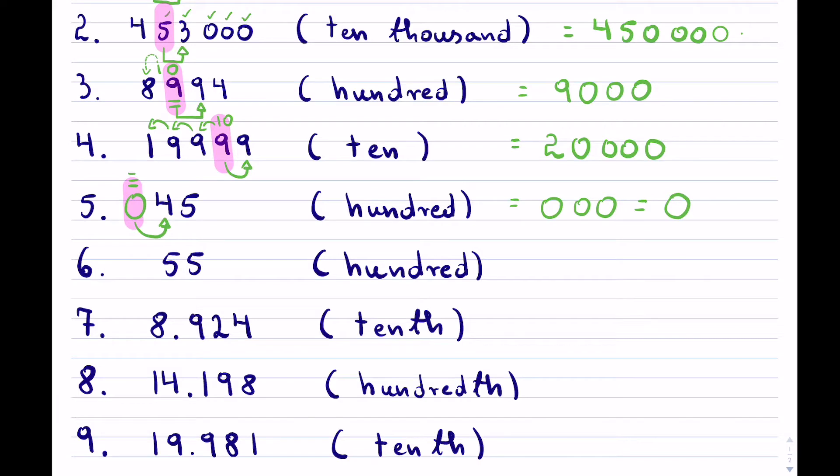As a contrast, question 6 is 55, asking us to do the same thing. Now the difference is the 0 in the hundreds place looks and sees a 5. The digit 5 or above will increase that 0 by 1, and that turns it into 100.